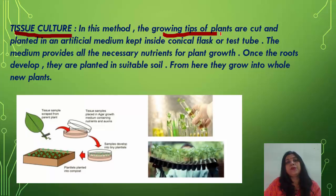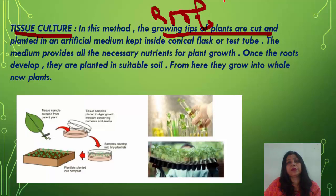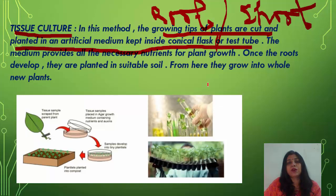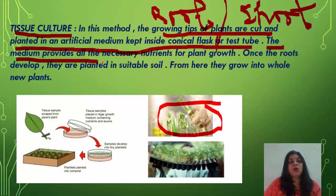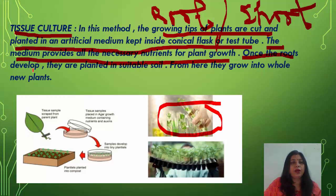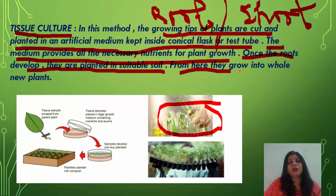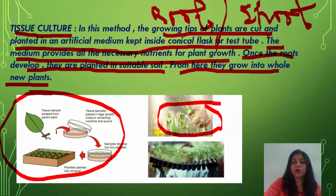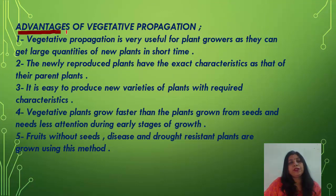In tissue culture, the growing tips of plants — root and shoot tips, or tips of leaves or branches — are cut and planted in an artificial medium kept inside test tubes or conical flasks. The medium provides all necessary nutrients for plant growth. Once roots develop, the plants are transferred to suitable soil and grow into whole new plants. Tissue culture is a latest technique in vegetative propagation.